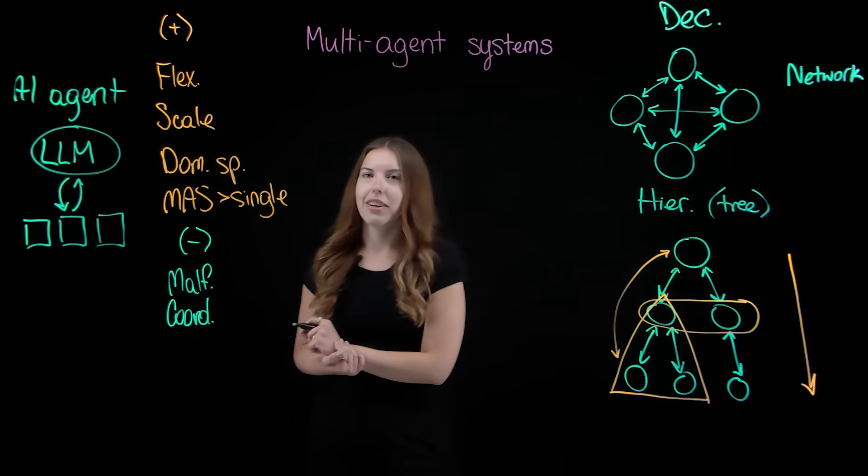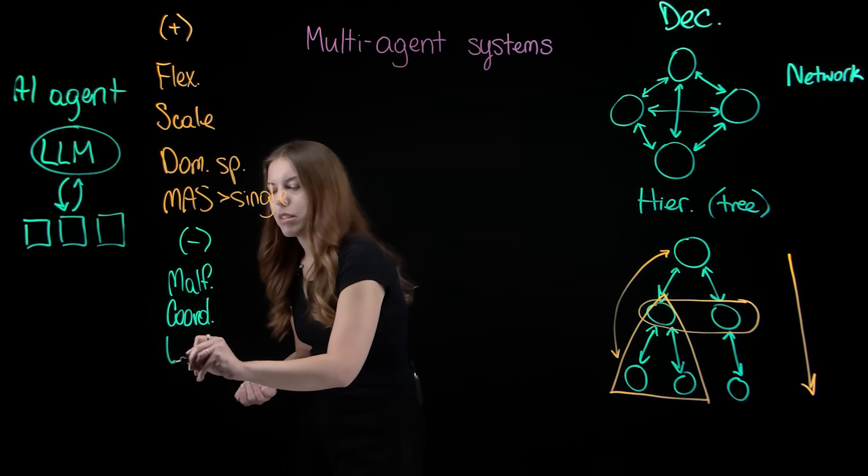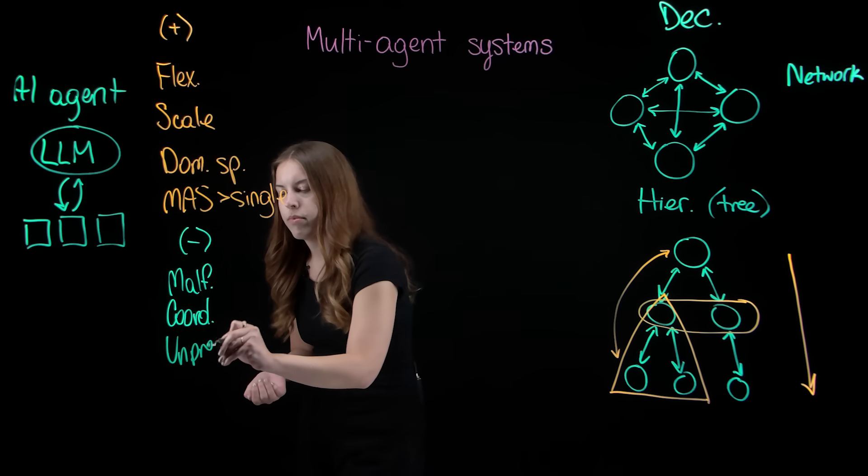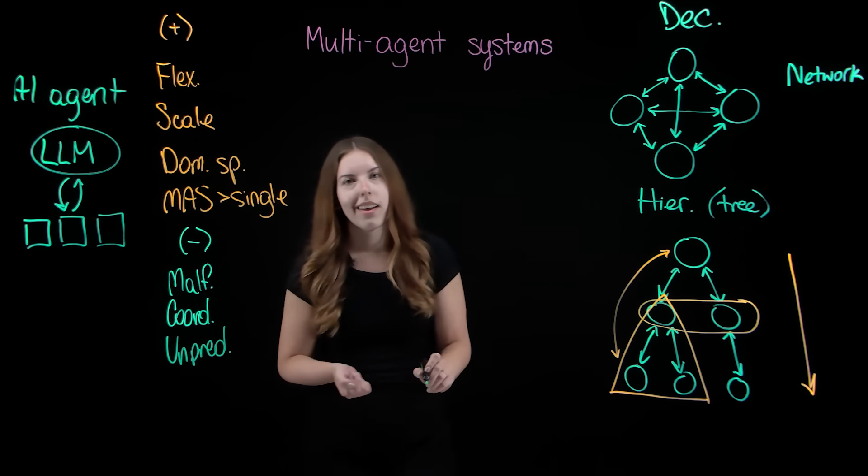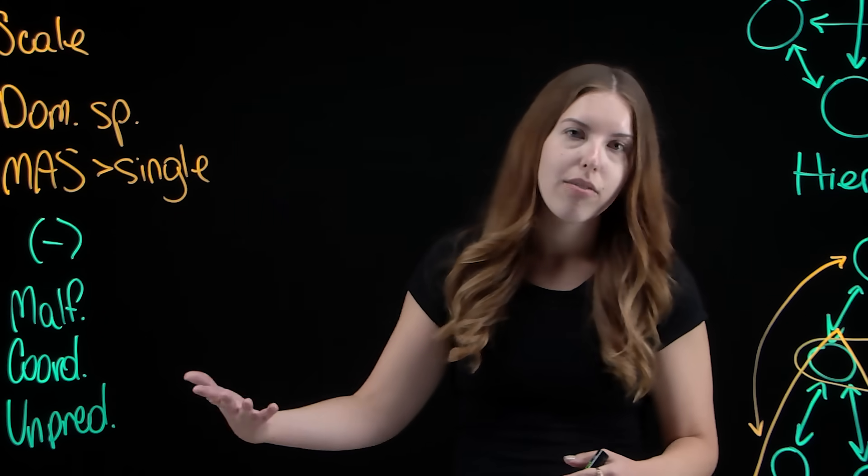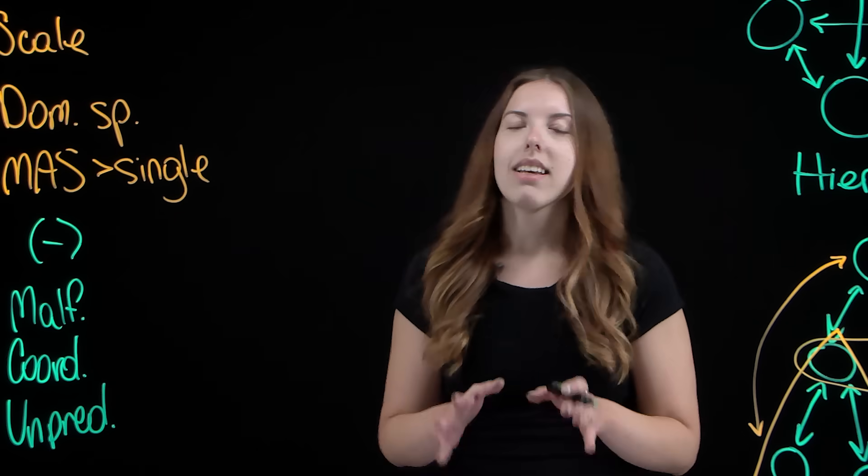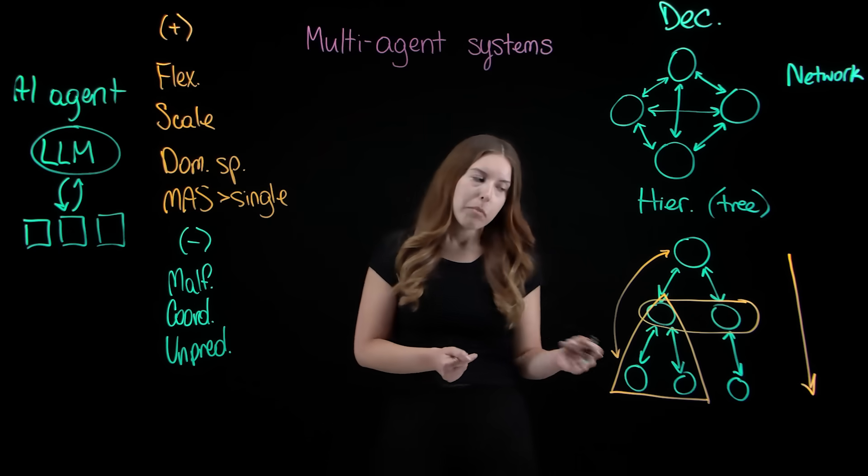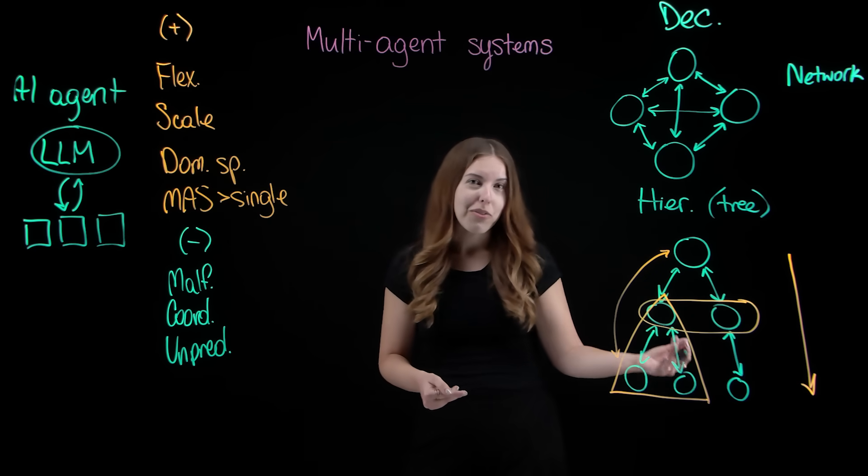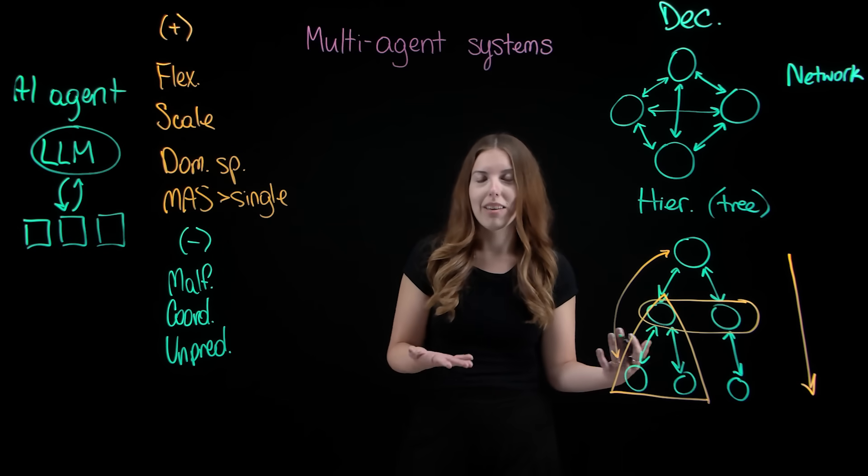And the last challenge we'll touch on here is the risk of unpredictable behavior. Though this drawback in and of itself isn't unique to multi-agent systems, it can easily be amplified. Typically, the more agents are involved, the greater the unpredictable behavior becomes.